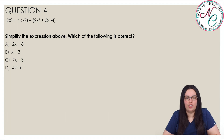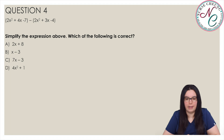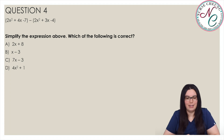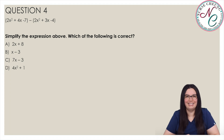Parentheses 2x squared plus 4x minus 7 minus parentheses 2x squared plus 3x minus 4. Simplify the expression above — which of the following is correct? Is it A, 2x plus 8; B, x minus 3; C, 7x minus 3; or D, 4x squared plus 1? The correct answer is B, x minus 3.